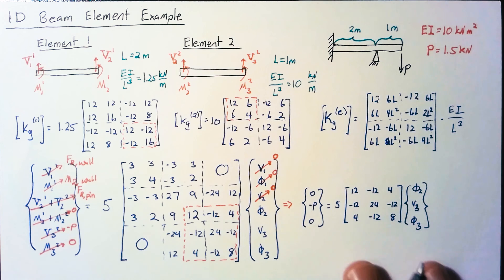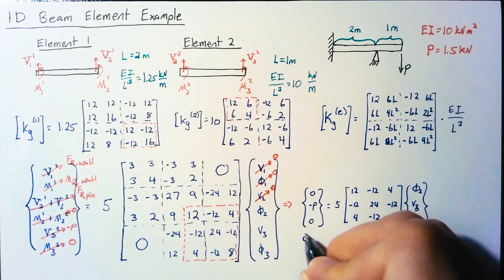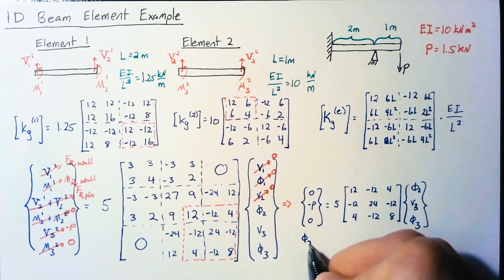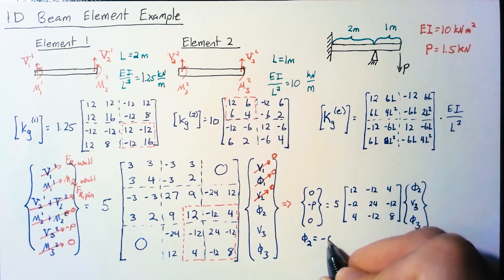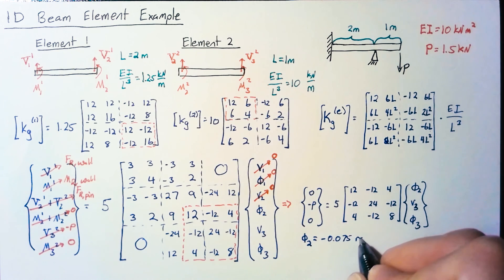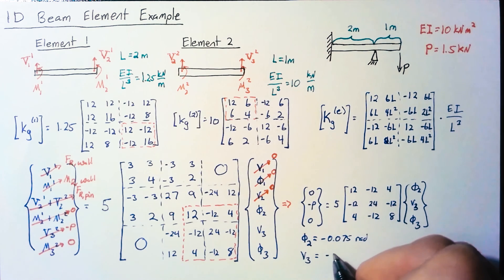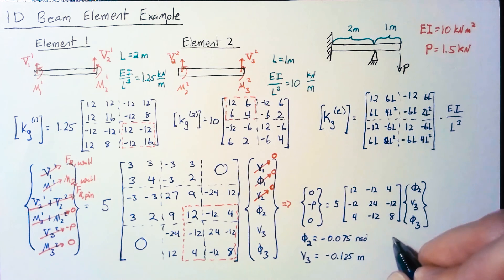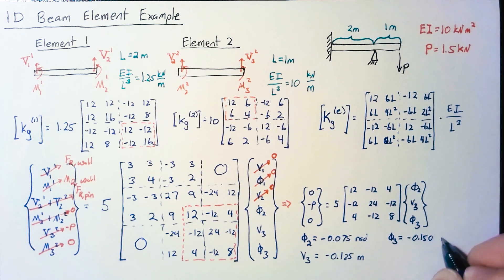The next step is to use the computer to solve this system. If we do that, we get rotation at node 2 of -0.075 radians, V3 displacement of 0.125 meters, and φ3 of -0.150 radians.